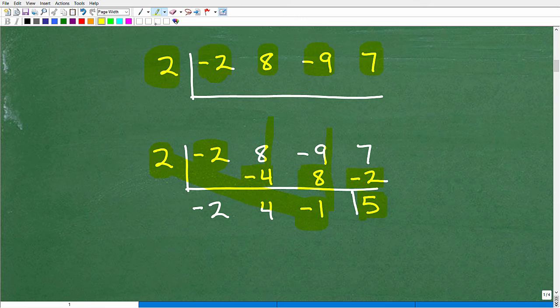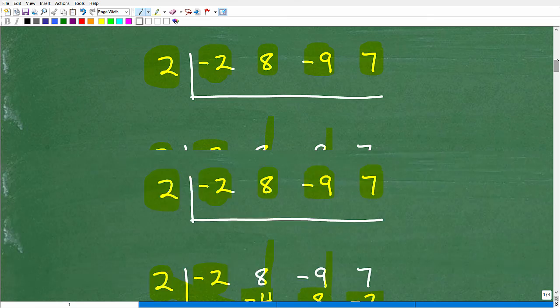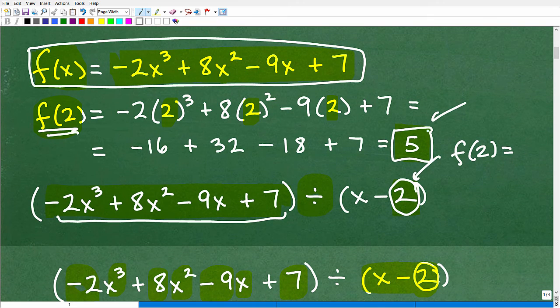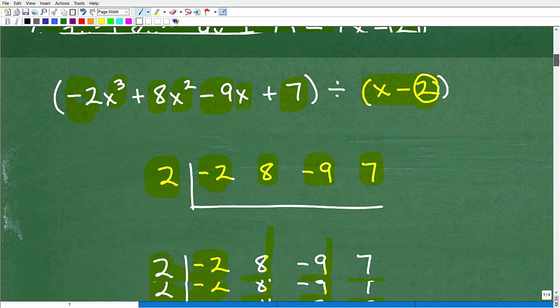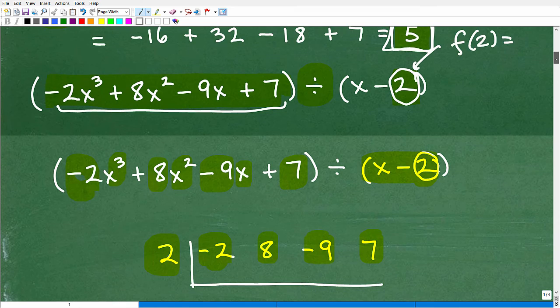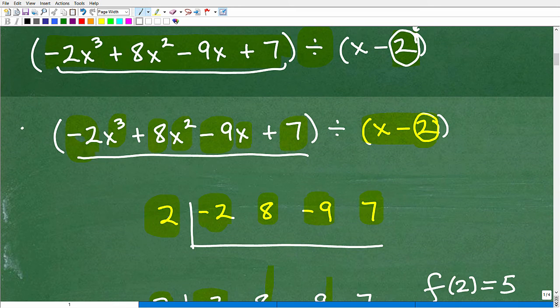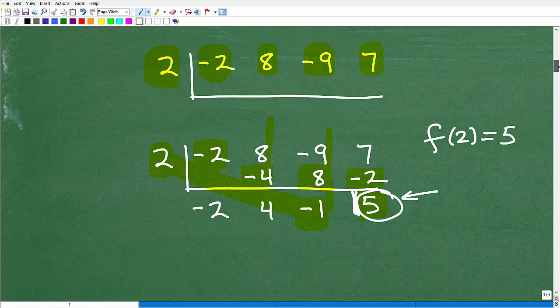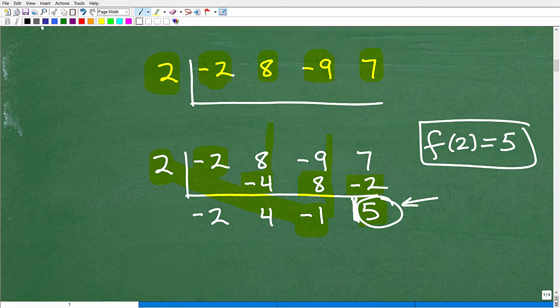This last number, notice I have a little line here. This is our remainder. This is the answer. This is the same as this. Remember, I found f of 2, that function. Our answer was 5, so it's the same thing. This answer here is f of 2. Our answer is 5. So if you want to evaluate this function for a particular value, for example 2, I want to find f of 2 of this function. It's the same thing as synthetically dividing by 2, and then we look at the remainder, and there you go. That is the answer.